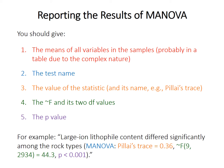When reporting results, give the means of all variables in all samples — likely as a table given the complexity. If you only have two variables, you could make a scatter plot with samples color-coded or using different symbols. If you have more than two variables it's very difficult to show graphically. You should give the test name, report that you did MANOVA, the value of the statistic specifying whether you used Pillai's trace or Wilkes' lambda, the approximate F value with its two degrees of freedom, and the P value.